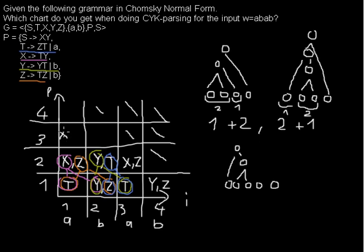For the other split — taking a span-2 symbol first — we can take X or Z from the first span-2 cell and combine it with T from position 3. We check: X and T — no rule. Z and T — we have a T for getting Z and T. So we also write T into this span-3 cell.